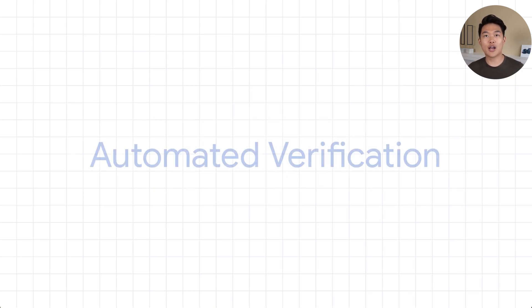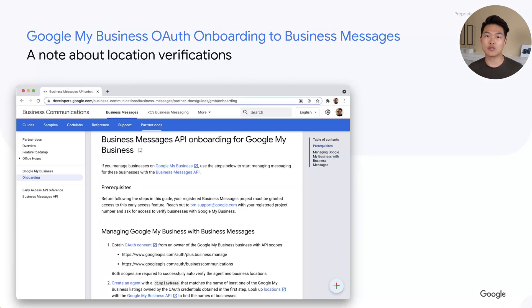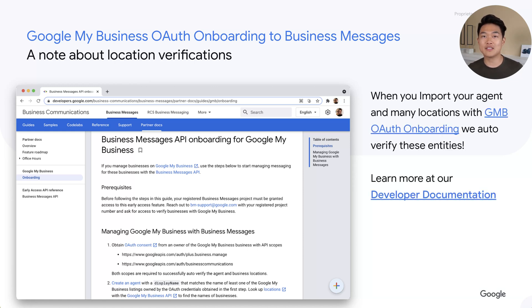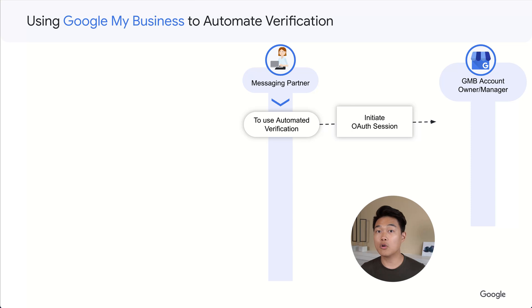This seems like a lengthy process that might not be suitable for situations where you have thousands of locations. Fortunately, we do have an automated verification process that you can take advantage of to streamline your launches. Our automated verification process leverages Google My Business listing verifications as a means to auto-verify the agents and locations in business messages. It requires a little bit of setup, but once you get the flow down right, you can auto-verify hundreds and thousands of locations and agents with ease. To implement automated onboarding for business messages, you must initiate an OAuth login flow with the Google My Business listing owner or manager.